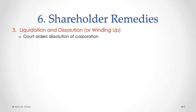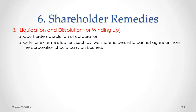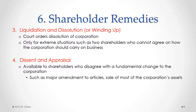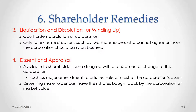Liquidation involves a court ordering the dissolution of the corporation. Because it involves basically eliminating the corporation, this is only available in extreme situations — such as where two shareholders cannot in any way agree on how the corporation should carry on its business. The fourth available shareholder remedy is called dissent and appraisal. This remedy is available to shareholders who disagree with a fundamental change to a corporation, such as a major amendment to the articles of a corporation or a sale of most of the corporation's assets. The dissenting shareholder can ask to have their shares bought back by the corporation at their market value.